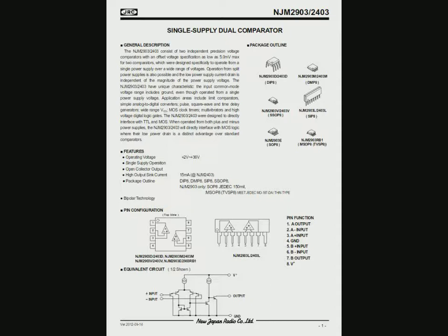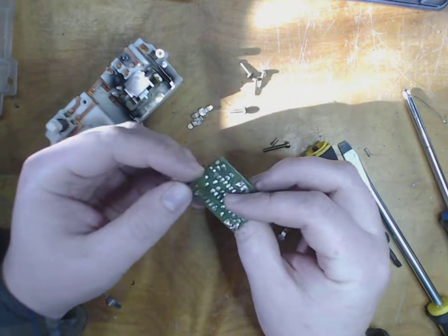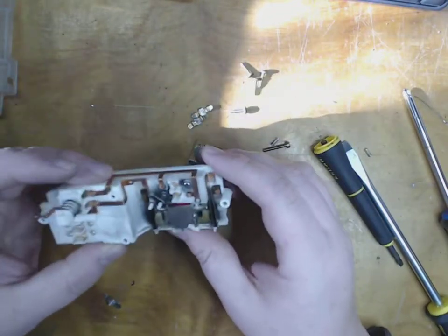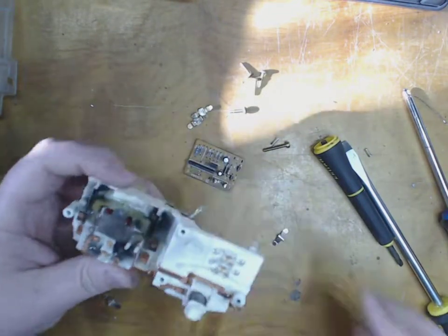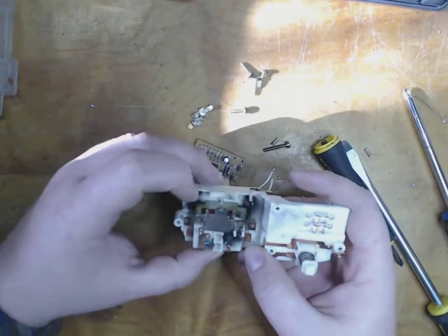That sort of fits with my theory there that they're just watching the voltage across this little thing here to detect the current, and it's probably set by one of these resistors. It's really no surprise that this crapped out considering the amount of shit stains on here.